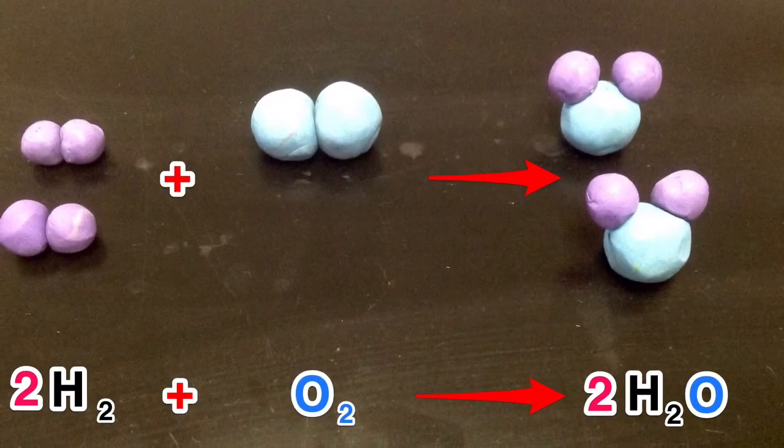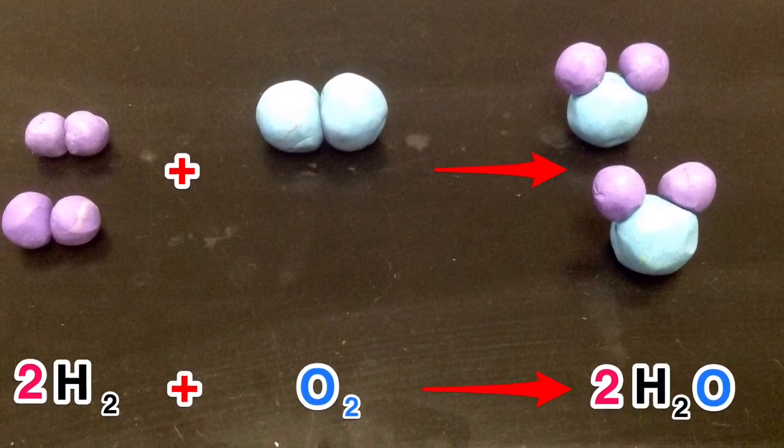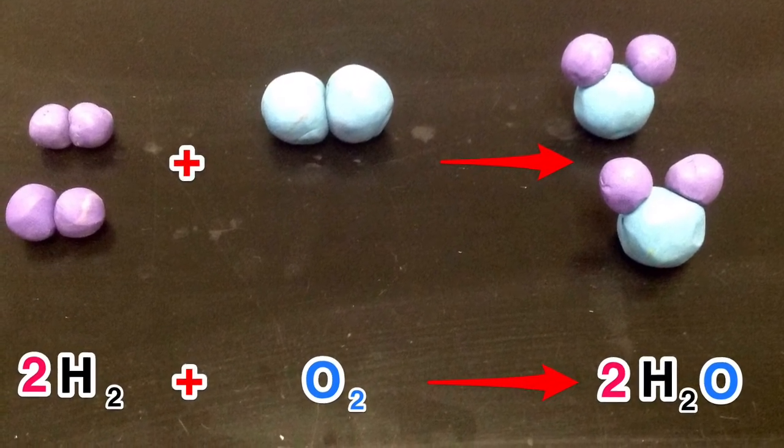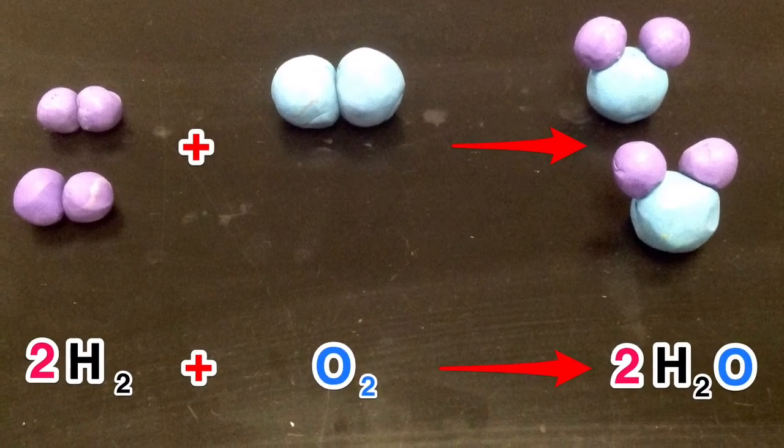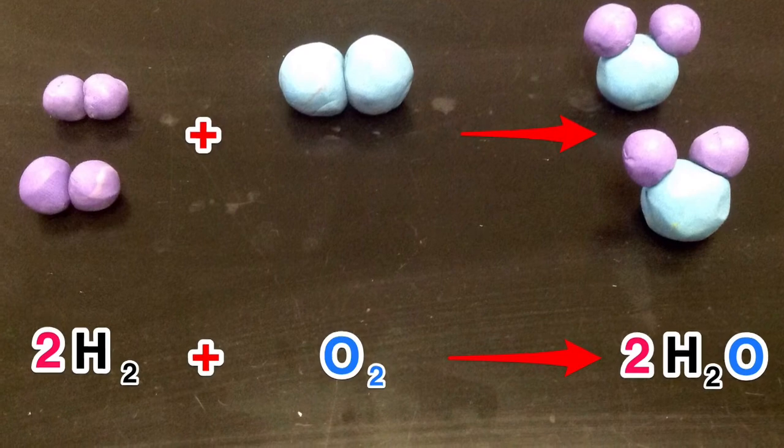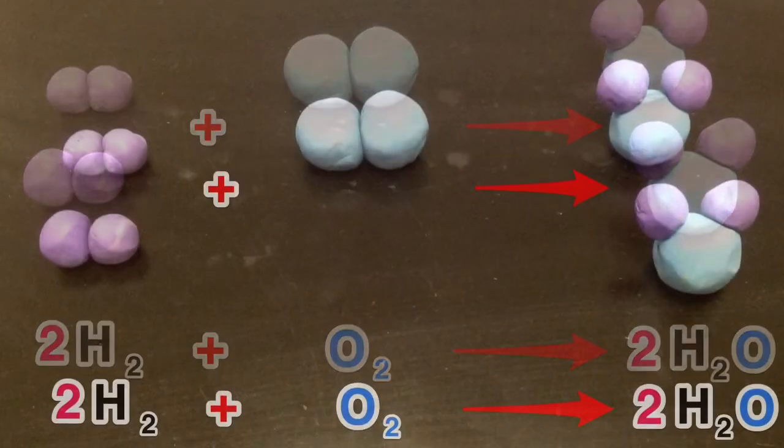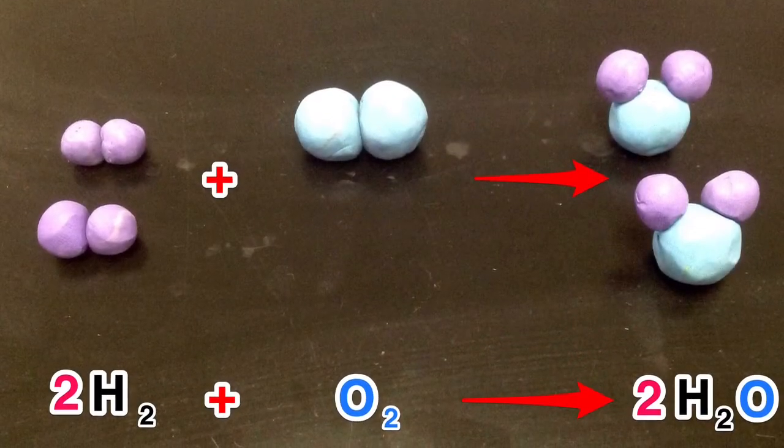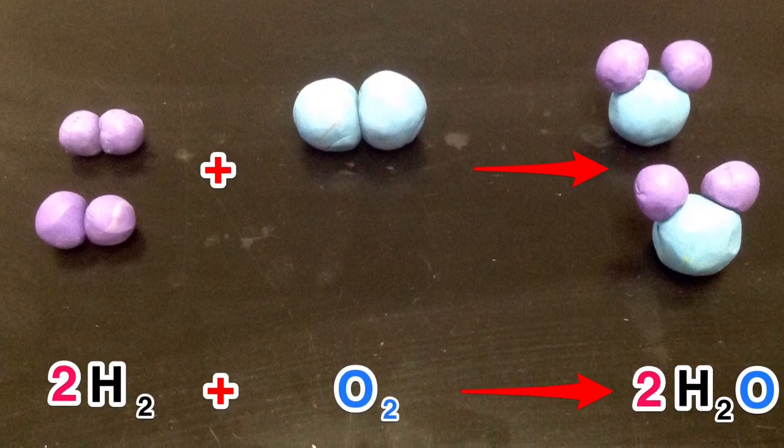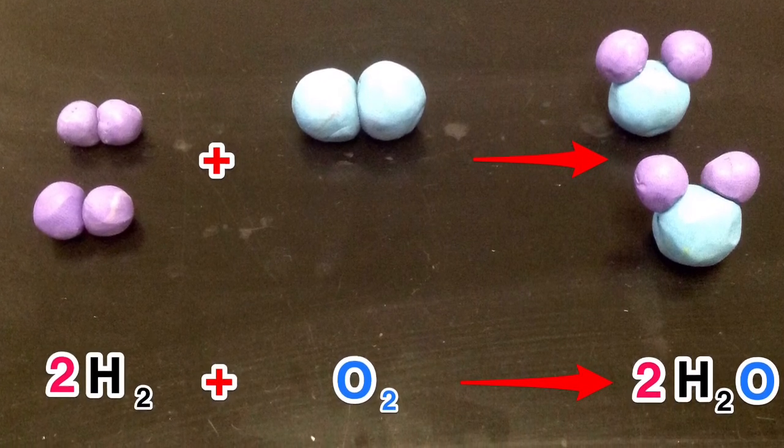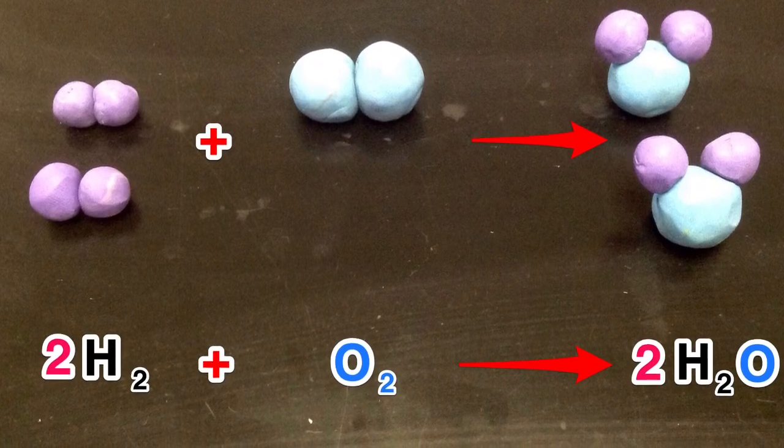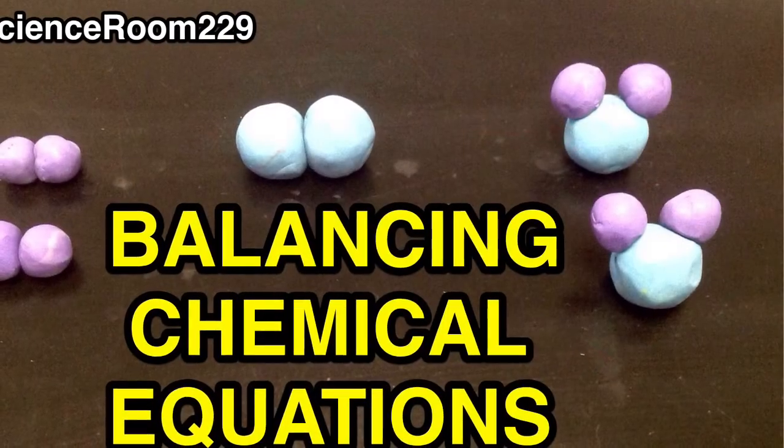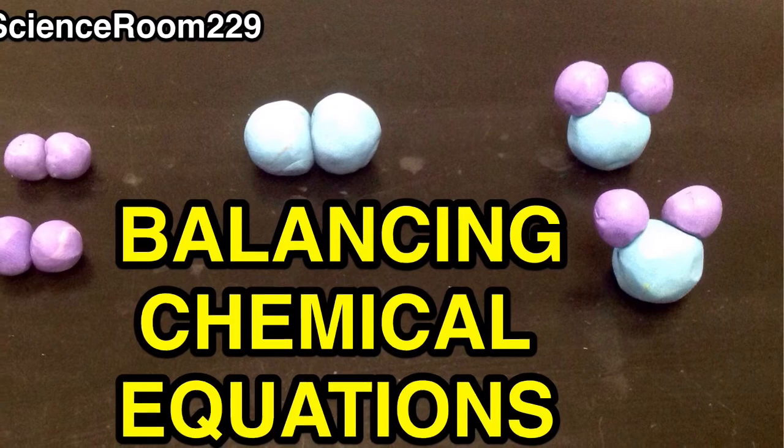When we check our atom counts we now have four hydrogen on the left and four hydrogen on the right, two oxygen on the left, and two oxygen on the right. We now have a balanced chemical equation. So the final balanced chemical equation for water is 2H2 plus O2 yields 2H2O. And remember, chemistry is all that matters.